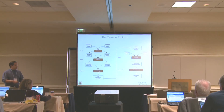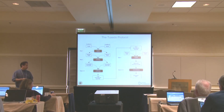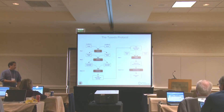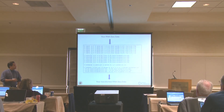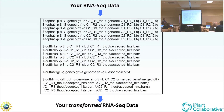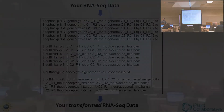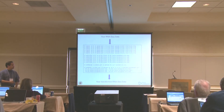Even further downstream is CummeRbund, which is an R library. R is a statistical programming and plotting language that's very useful for drawing graphs, doing statistics, and various other things. This is a series of commands which, to someone familiar with the command line interface, says 'great, I only have to run these 15 things and my analysis is done.' But for most people, you end up with a bunch of tabular data that requires further interpretation, and you may not have access to a Linux server or be familiar with the command line interface.